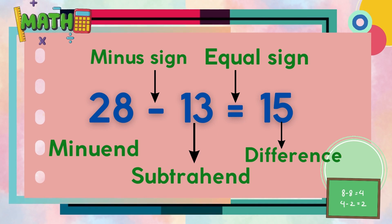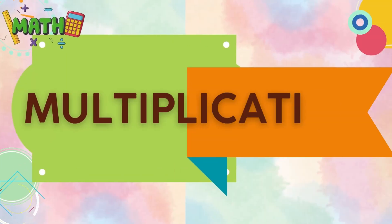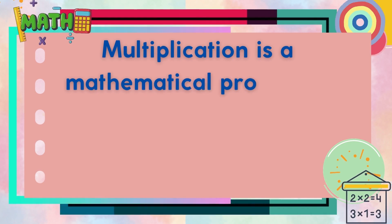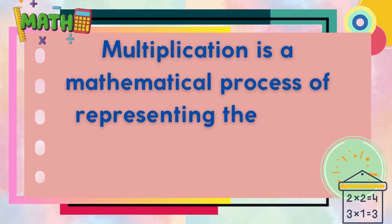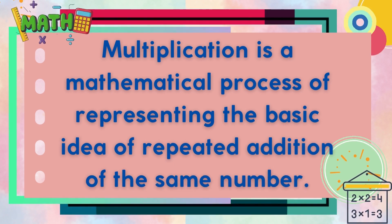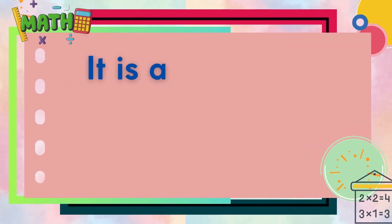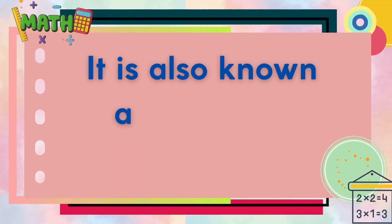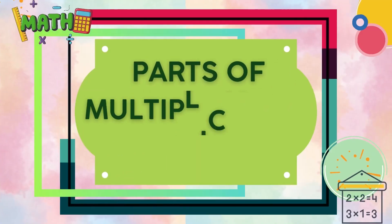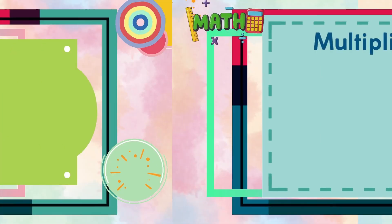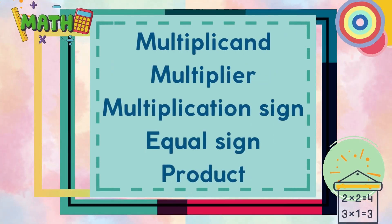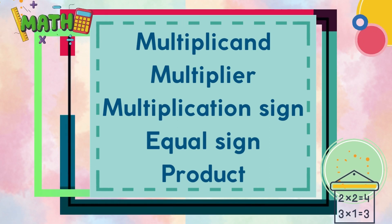The third arithmetic operation is multiplication. It is a mathematical process representing the basic idea of repeated addition of the same number, also known as repeated addition. The parts of the multiplication sentence are: multiplicand, multiplier, multiplication sign, equal sign, and product.